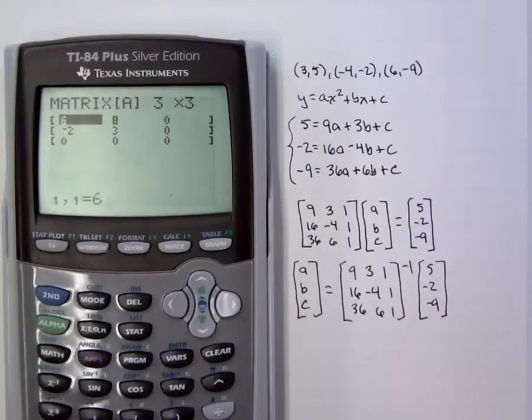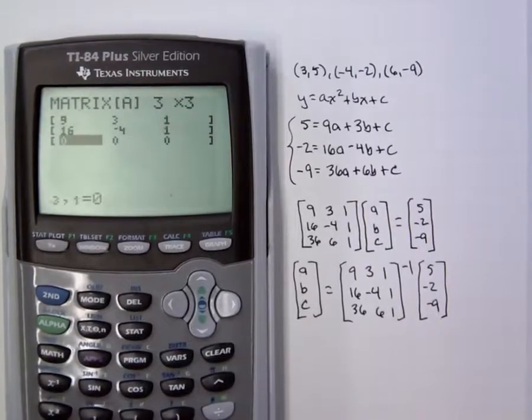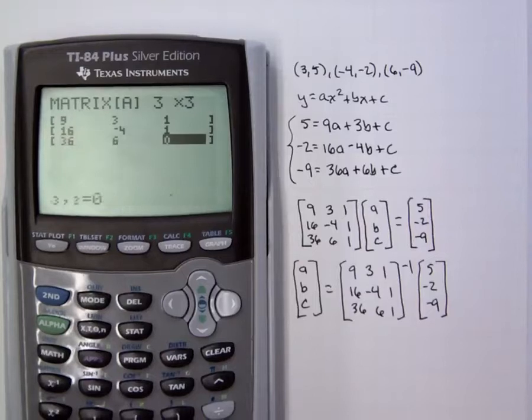And then we just enter the values a row at a time. So we have 9, 3, 1, 16, -4, 1, and 36, 6, 1.